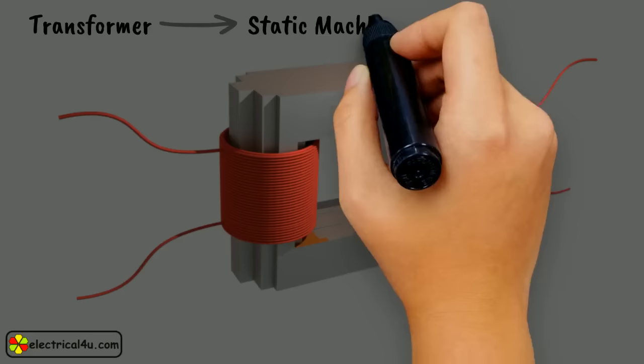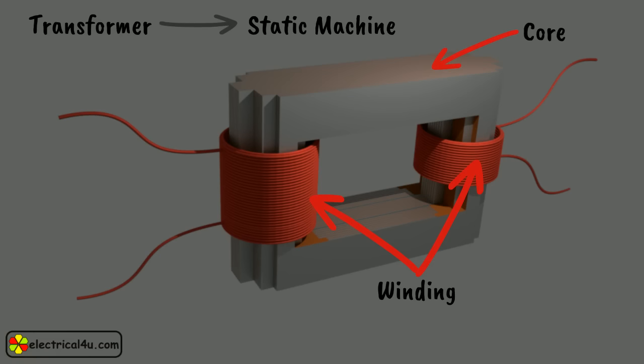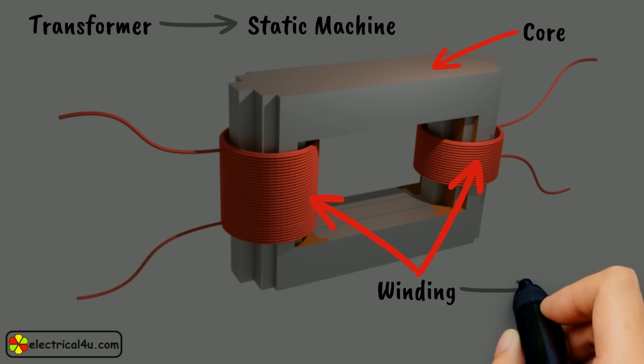A transformer has three main parts: two windings and a metallic core on which the windings are wound. Windings are in the form of a coil made of a good conductor of current. The windings of a transformer play a main role in the machine. The winding coils behave as an inductor.